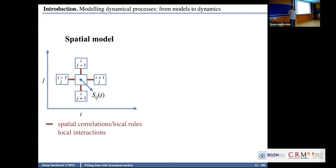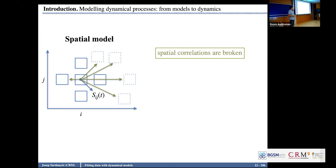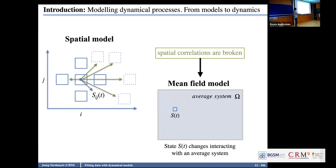Always when we have a spatial model, we can make the mean-field model by breaking the correlations. If the state of IJ depends on an average system omega, this is a mean-field model. When we have an ordinary differential equation with some interactions, we do not have space — we are assuming that x changes as a function of x or other variables, and this is a mean-field approach.